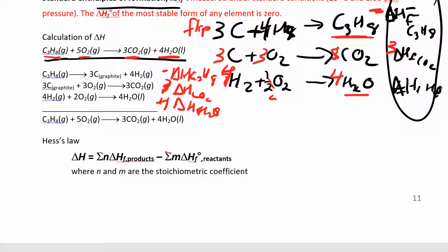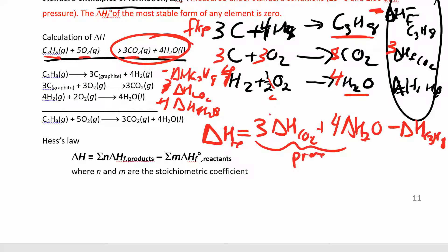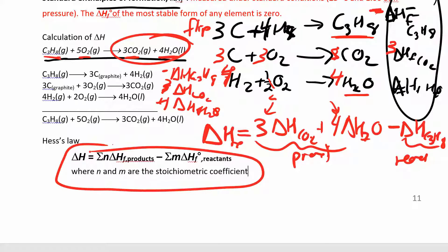The final delta H of the reaction is basically products minus reactants multiplied by their stoichiometric coefficients. So delta H of reaction equals three times delta H of CO2 plus four times delta H of water, minus delta H of C3H8. M and N are the stoichiometric coefficients. The reactant term is negative because in a formation reaction the compound is the product, but here I wanted it as a reactant, so I flipped it and changed the sign. That's why it's products minus reactants.